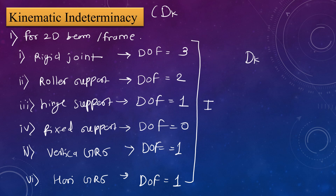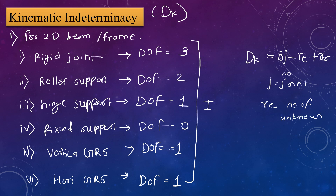The second approach uses the formula dk = 3j − re + rr, where dk is the degree of kinematic indeterminacy, j is the number of joints, re is the number of unknown reactions, and rr is the internal release. For kinematic indeterminacy, internal release is calculated as m' + 2. We will see a numerical example to differentiate how to calculate dk using both the degree of freedom method and this formula.